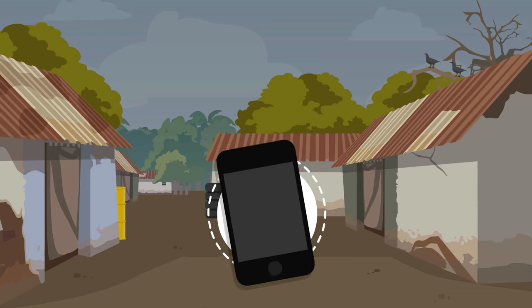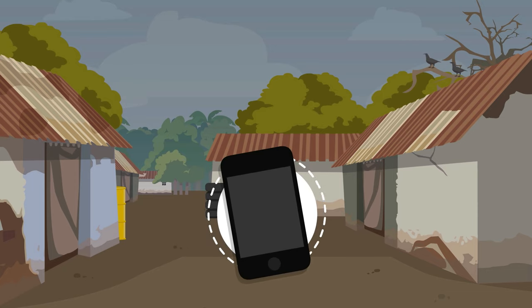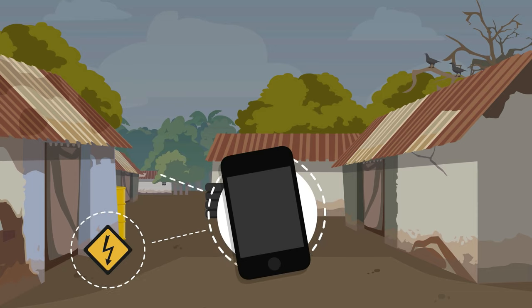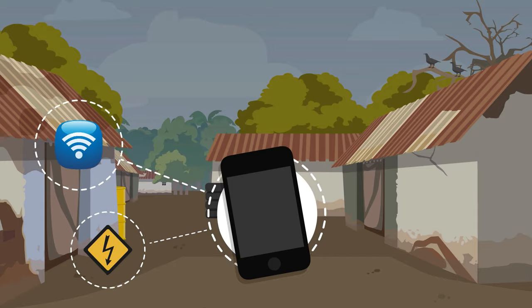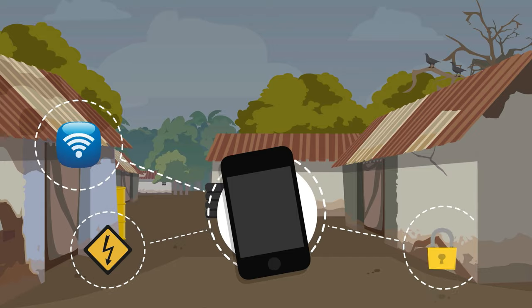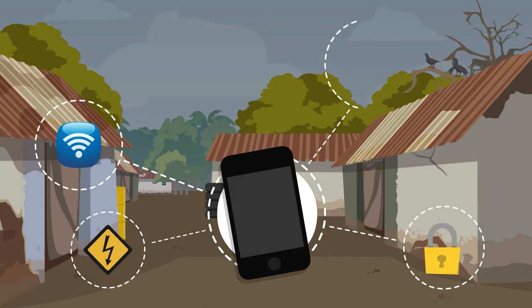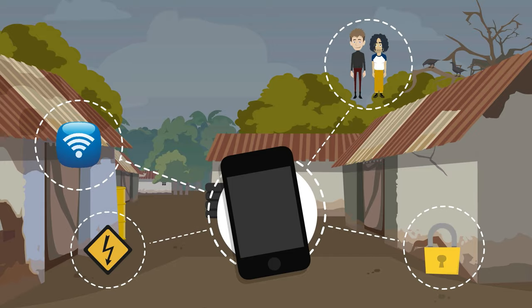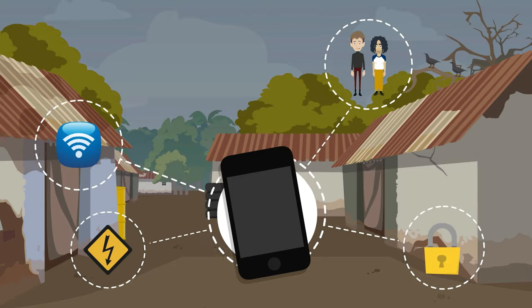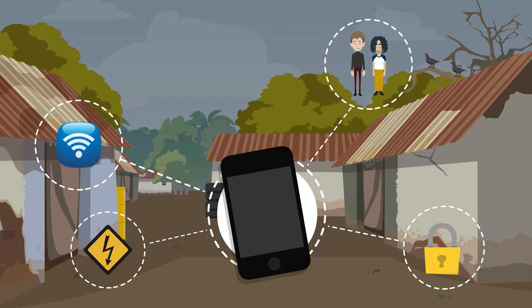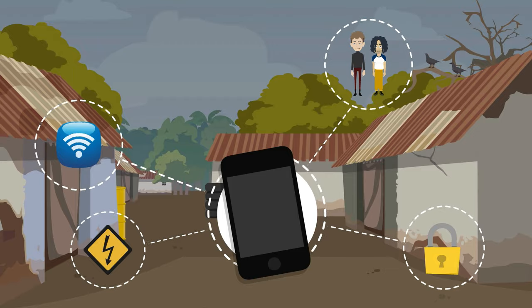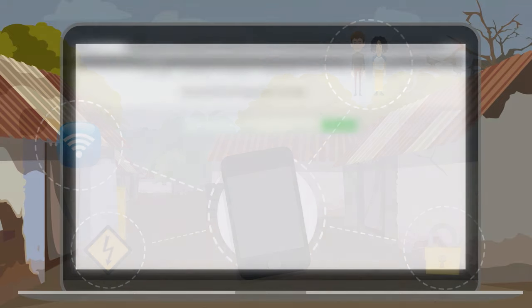At Kobo Toolbox we know how difficult data collection can be in the field. Unreliable electricity, bad internet connections, security and logistical problems, and lack of trained staff can be huge challenges to collecting data quickly and reliably.